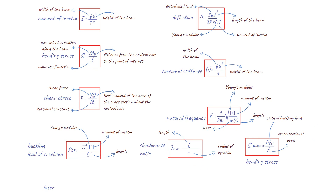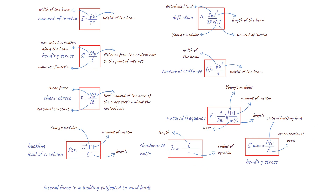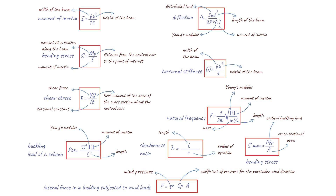Finally, we have the formula for the total lateral force in a building subjected to wind loads, represented by the equation where F is the total lateral force, q_ez is the wind pressure acting on the building, c_p is the coefficient of pressure for the particular wind direction, and A is the projected area of the building normal to the wind direction. This formula is used to calculate the lateral force that a building experiences due to wind loads, which is important for determining the structural design of the building and ensuring that it can withstand these forces. The coefficient of pressure and projected area depend on the shape and orientation of the building, and the wind pressure depends on the local wind conditions and the height of the building.